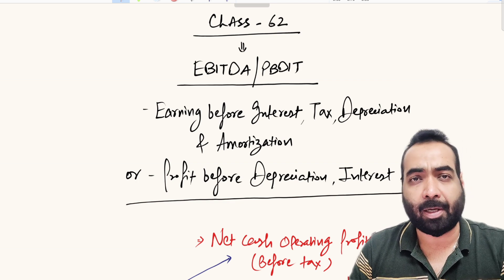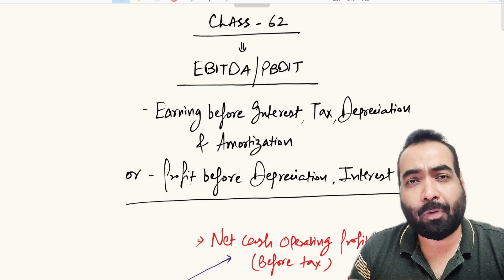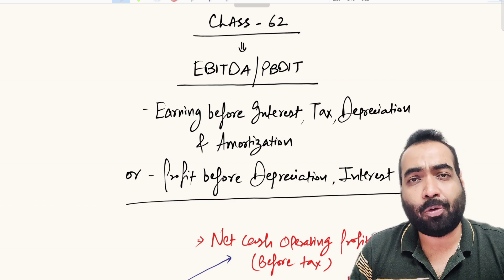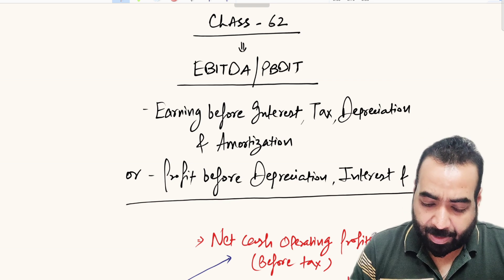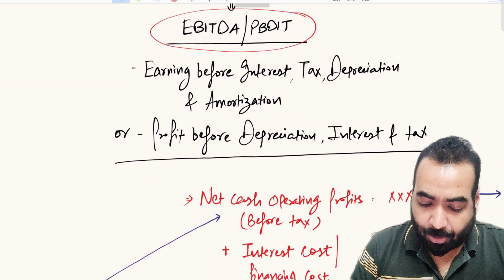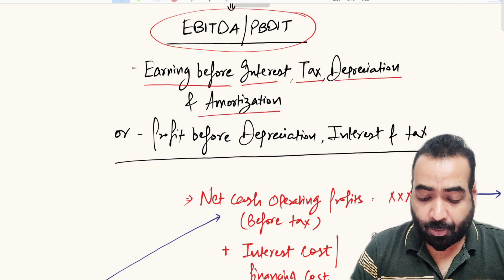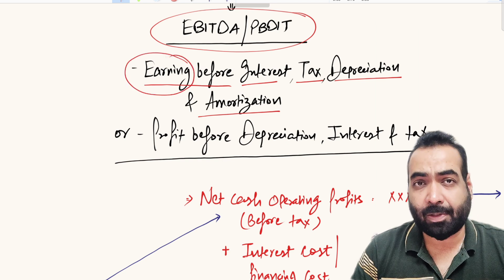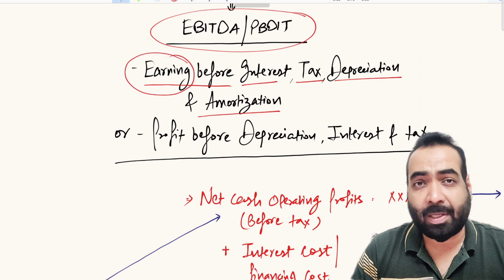So how do we calculate EBITDA and what does EBITDA tell us? EBITDA and PBDIT is the topic for discussion today. It is called Earnings Before Interest, Tax, Depreciation, and Amortization. So this is your earning from the business.